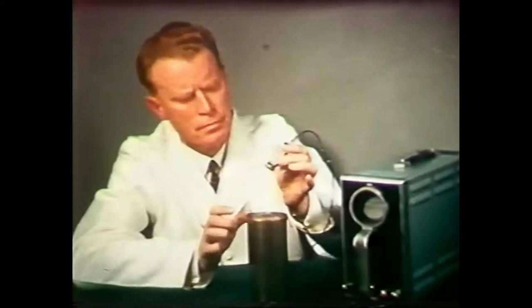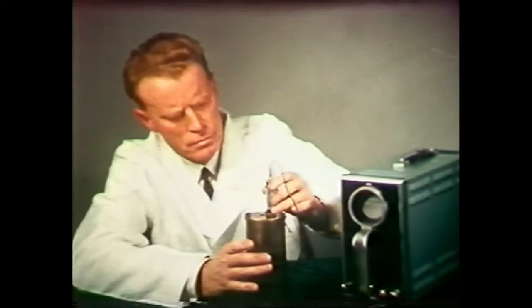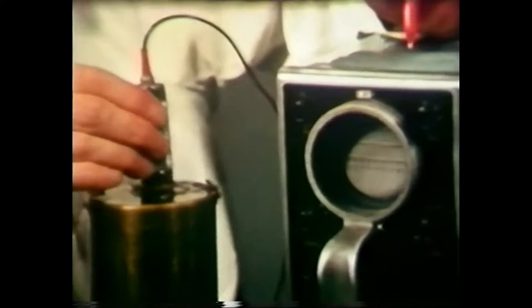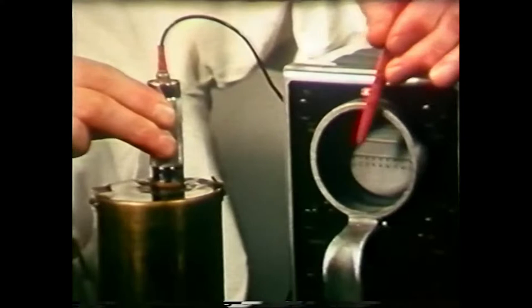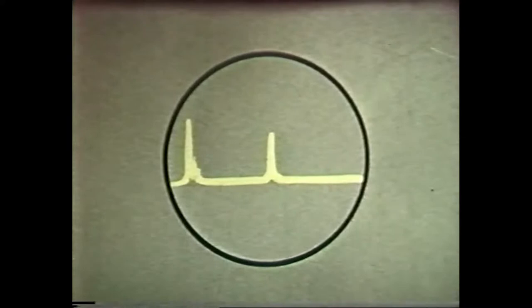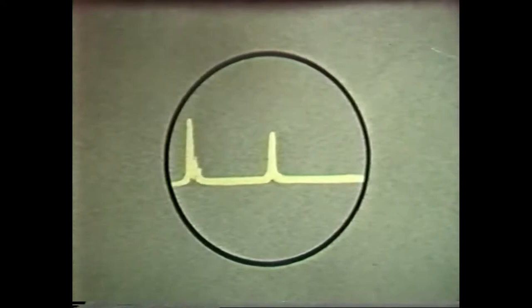You are familiar with ultrasonic echo sounding for mapping the bed of the ocean, for submarine detection, and for finding flaws in metal structures. When an ultrasonic beam in its passage through metal encounters a flaw, a blip can be made to appear on a cathode ray tube. This drawing, taken from the tube face, shows the propagating source on the left and the blip to the right.